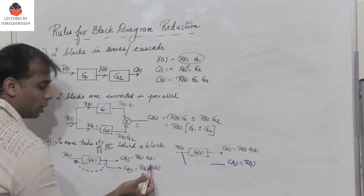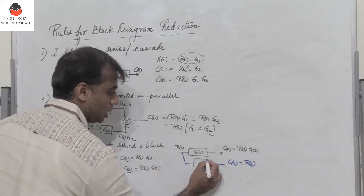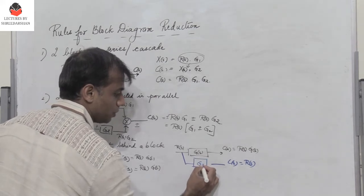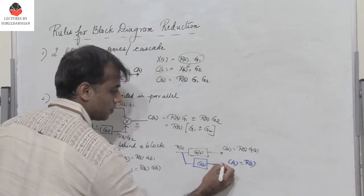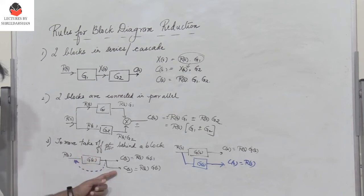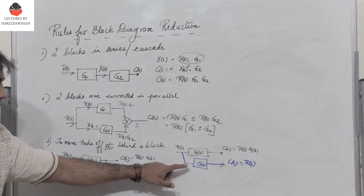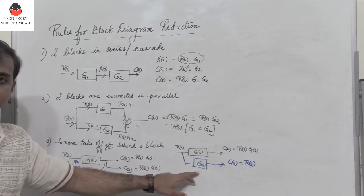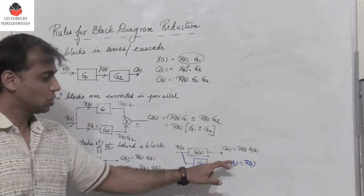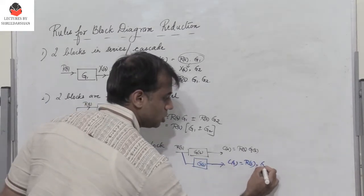Since there is an absence of g of s when the takeoff point is moved behind the block, we need to include a block with transfer function g of s in that path, so that the output remains c of s equals r of s into g of s.